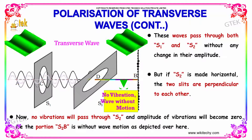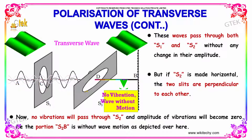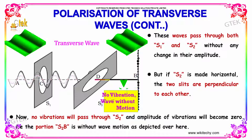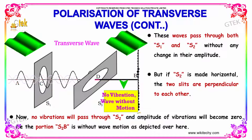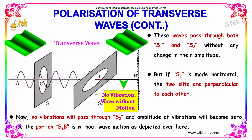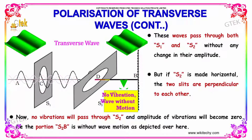But if S2 is made horizontal, the two slits are perpendicular to each other, so there won't be any vibration. No vibration will pass through S2 and the amplitude of vibration will become zero. The portion between S2 and B is without wave motion, as depicted here.